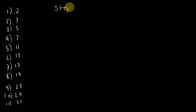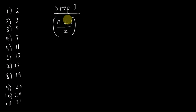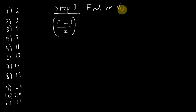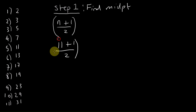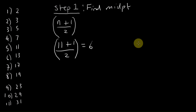So the first step — I'm going to write it in steps because it's a lot easier to see what we're doing. Step one is to find the midpoint. We constantly use this formula to find the midpoint of the list. So n is 11 because we've got 11 elements. That gives us 11 plus 1 divided by 2, which equals 6.